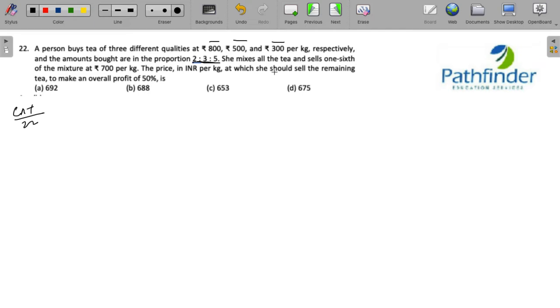She mixes all the tea and sells one sixth of the mixture at 700 per kg. The price in INR per kg at which she should be selling the remaining tea to make a profit of 50% is?